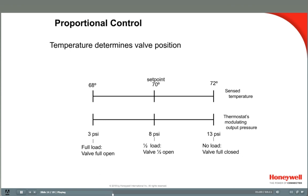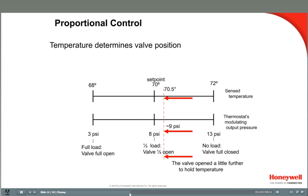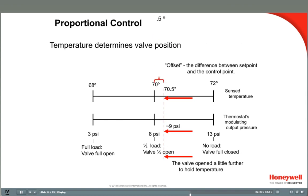Temperature changes make the bimetal increase or decrease the nozzle gap bleed rate, and this bleed rate rises and falls in proportion to room temperature change. As the temperature falls — indicating an increased heat load — a direct acting thermostat will make the branch line pressure fall, causing a normally open valve to modulate towards open, giving more heat. In this example, the temperature fell from 71 to 70.5 degrees, the branch line pressure fell to about 9 psi, causing the normally open valve to open a little further and increase hot water flow. The current offset is one-half of a degree.